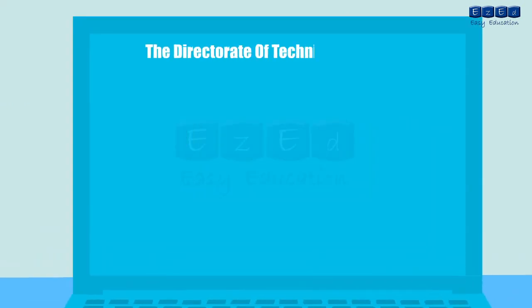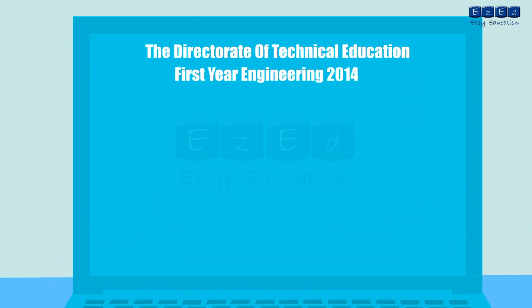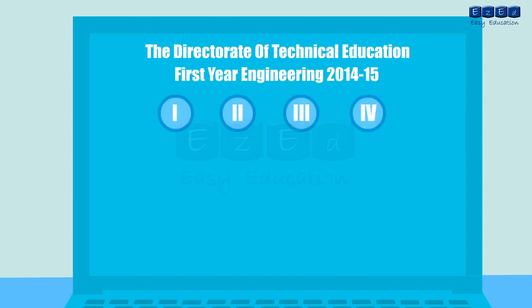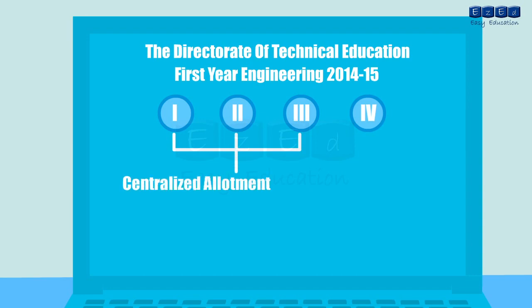The Directorate of Technical Education Mumbai is the competent authority for admission to first year engineering for the academic year 2014-15 and shall conduct a total of four rounds of the centralized allotment process. The first three rounds shall consist of centralized allotment wherein eligible candidates of respective rounds will fill and confirm fresh online option forms through their login ID for respective rounds.